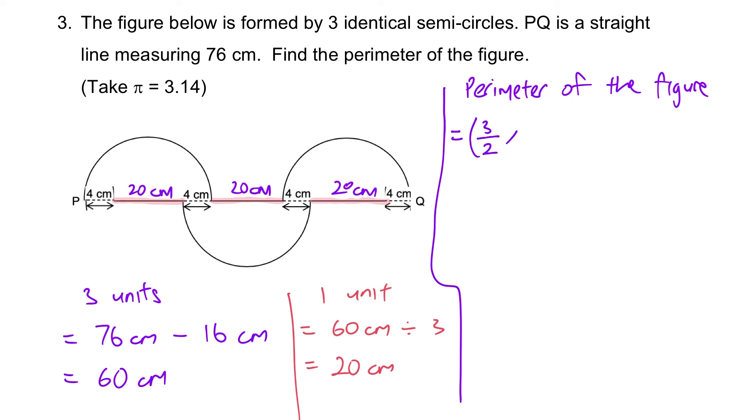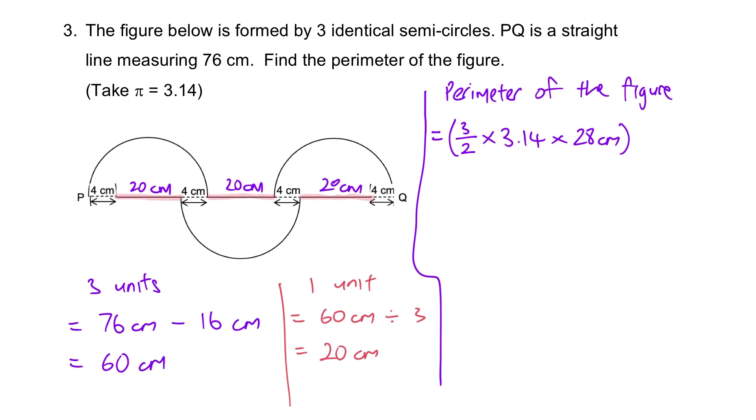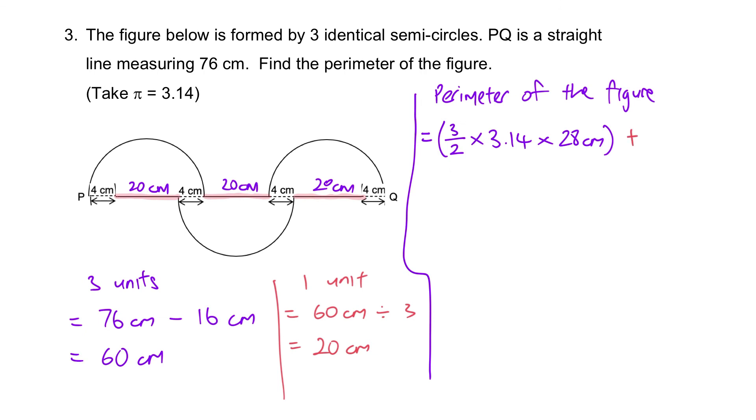Times π times the diameter which is 28, plus where else? Plus this, right? 24, 24, 20. So we know it's plus 24 plus 24 plus 20, and that should give us the answer of 199.88 centimeters.